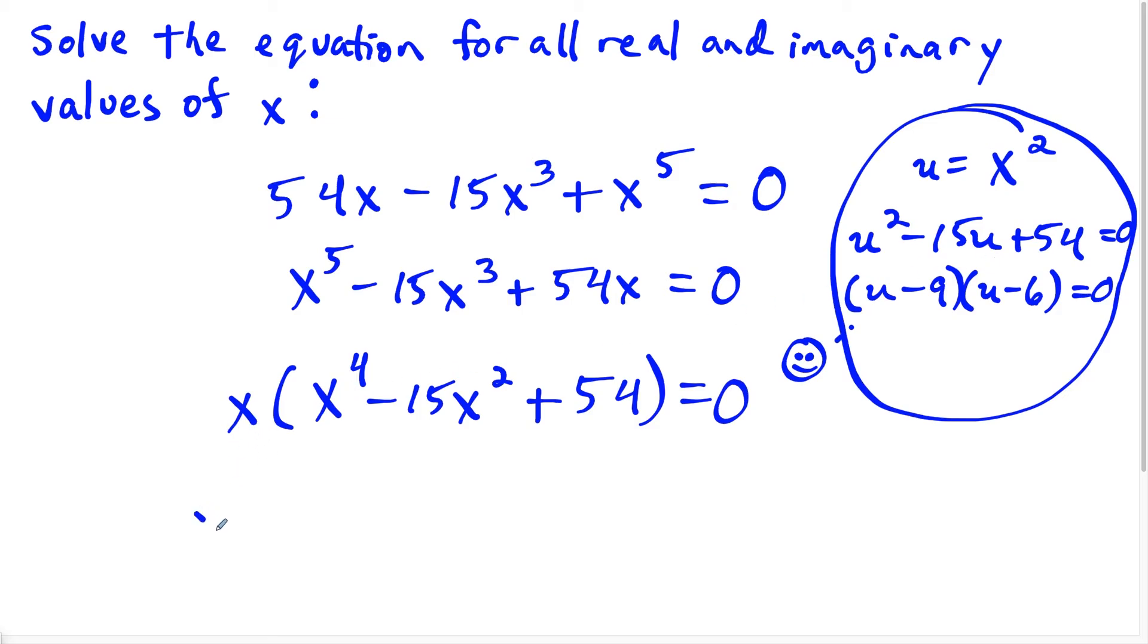So the x just carries down here. But now this trinomial here, this quartic trinomial, that's tough to say, I could break down as u minus nine, which is going to give us x squared minus nine times, and we have u minus six, which gives us x squared minus six, and this is all equal to zero.